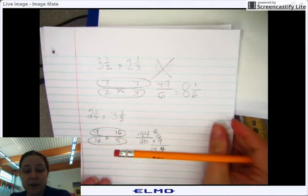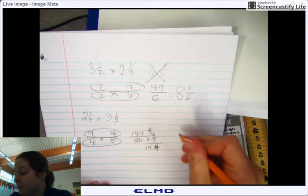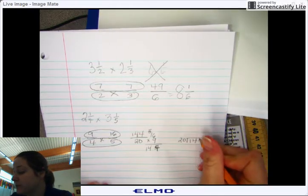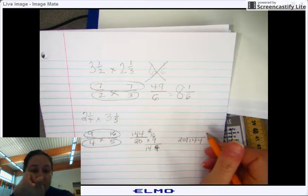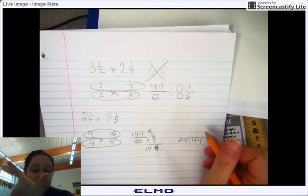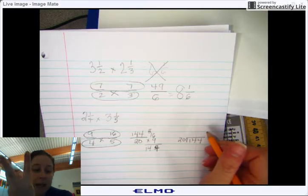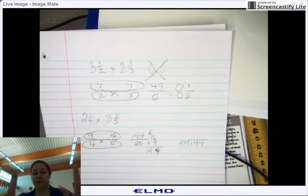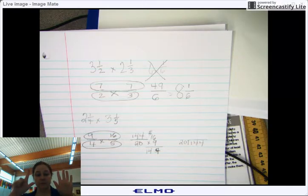So I get 144 over 4 times 5, which equals 20. And now I have to figure out how many times 20 can go into 144. Turn it into a division problem. 20, 40, 60, 80, 100, 120, 140. That leaves me with 7.